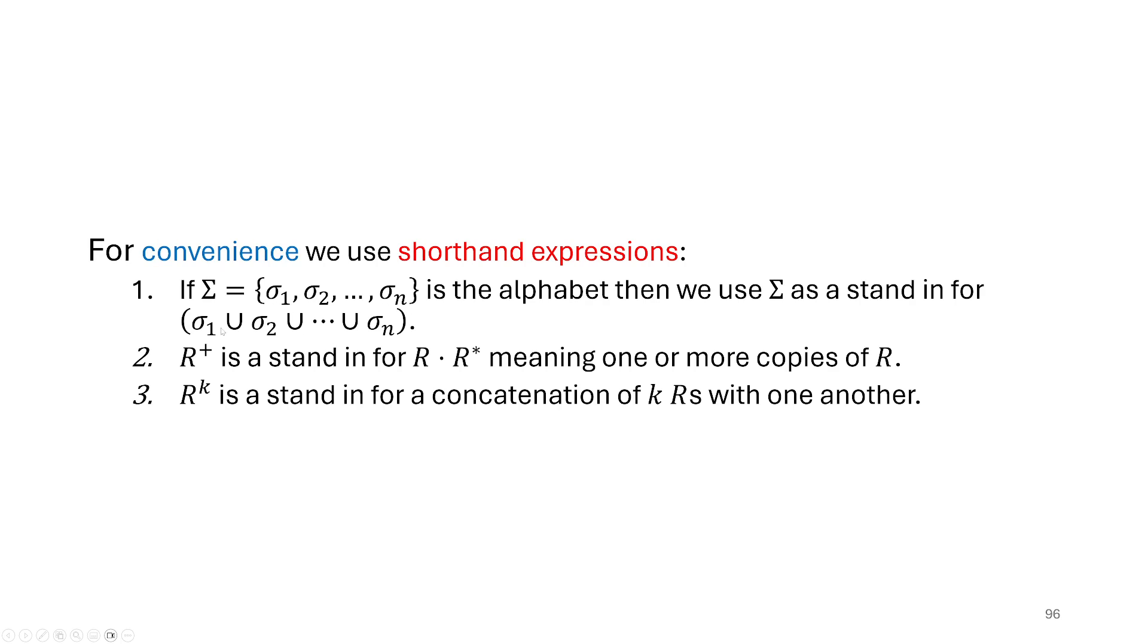we might want to write sigma 1 union sigma 2 union sigma dot dot dot dot dot union sigma n. That tends to be a little bit tedious for us, and so we usually just write sigma. We'll just write the name of the alphabet itself in place of all those symbols union together. That just again saves us some keystrokes if we're writing it, or maybe just makes it simpler for us to interpret it when we're reading it.